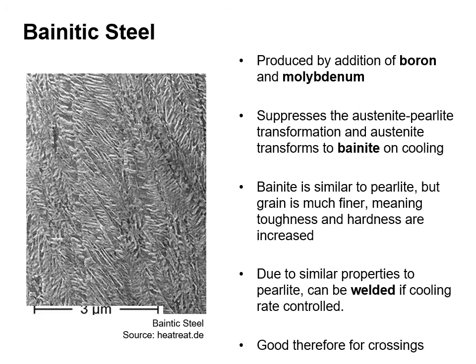Bainitic steel can be produced by adding boron and molybdenum. This suppresses the austenite-pearlite transformation, and austenite transforms to bainite on cooling. Bainite is similar to pearlite but the grain is much finer, meaning toughness and hardness are increased. Due to its similar properties to pearlite, it can be welded if cooling is controlled. Therefore, this is good for crossings.